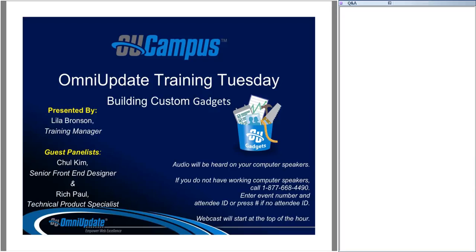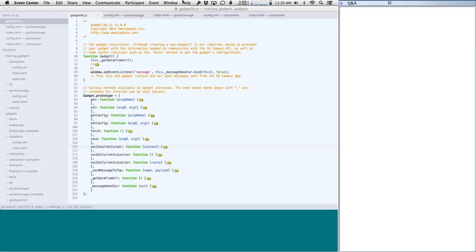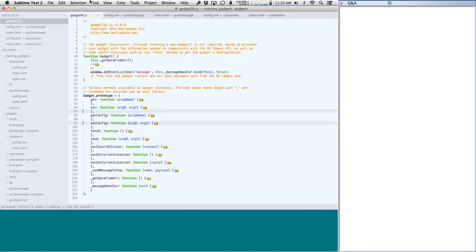Hi everyone, this is Chul. To build on what Rich was saying, I want to show you a few more things you can do using our gadget library. I have the gadgetlib.js file open in my code editor. Rich showed you how to directly address the OU Campus API using Ajax calls within the gadget, and how you can interact with the OU Campus front-end user interface — for example, by setting the location of OU Campus as he showed when clicking a username opened the user setup page.